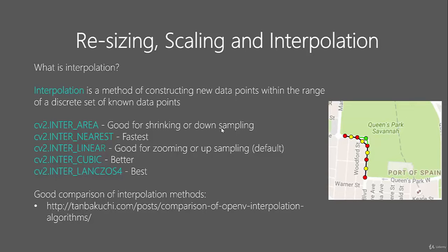Inter-area works by merging the pixels within the area, which is why it's good for down-sampling. Inter-nearest is the fastest algorithm according to the comparison. Linear interpolation is the default method used in zooming and is typically good.